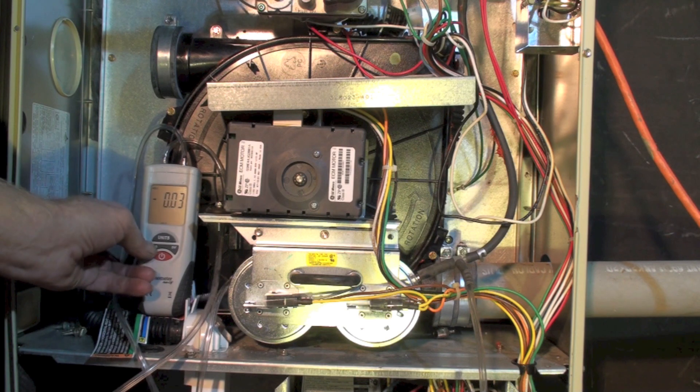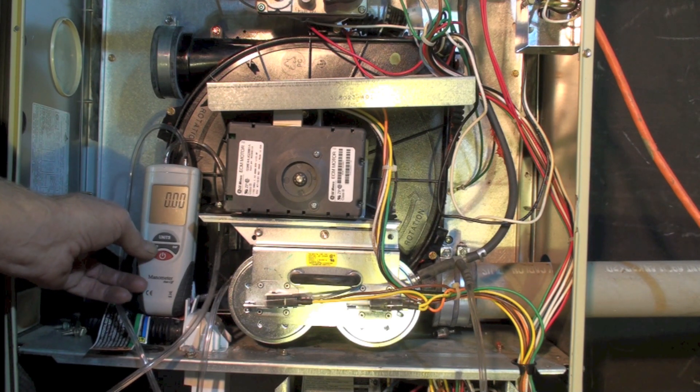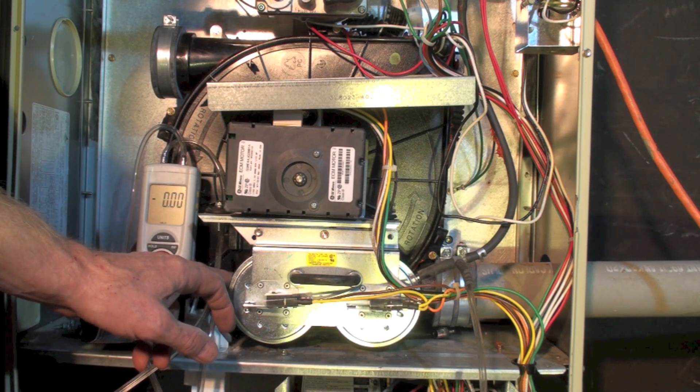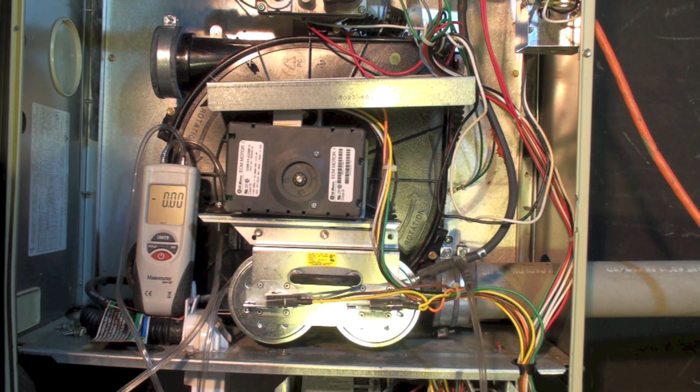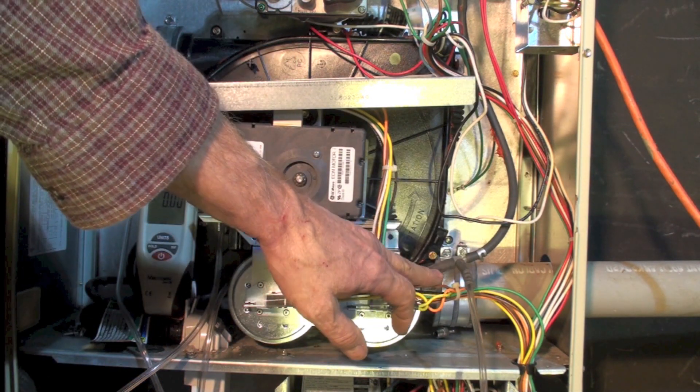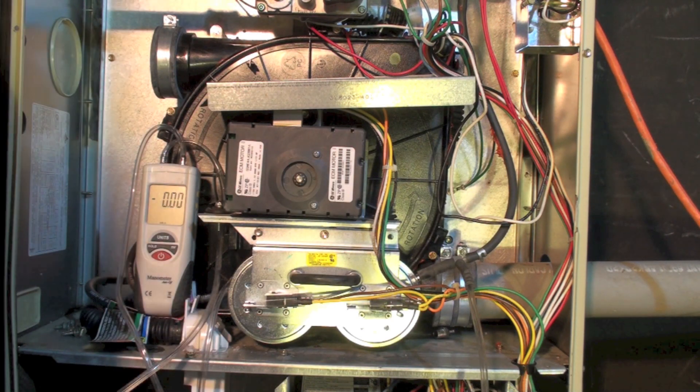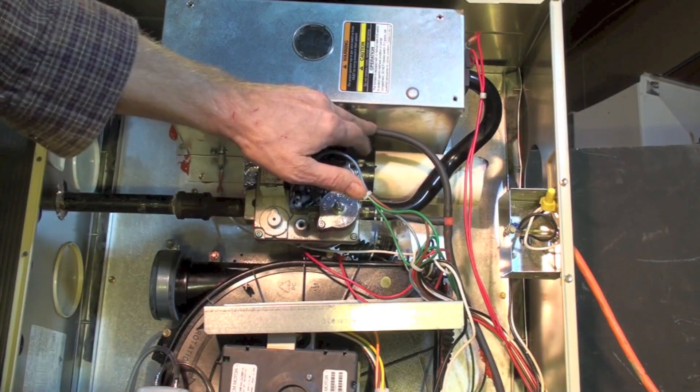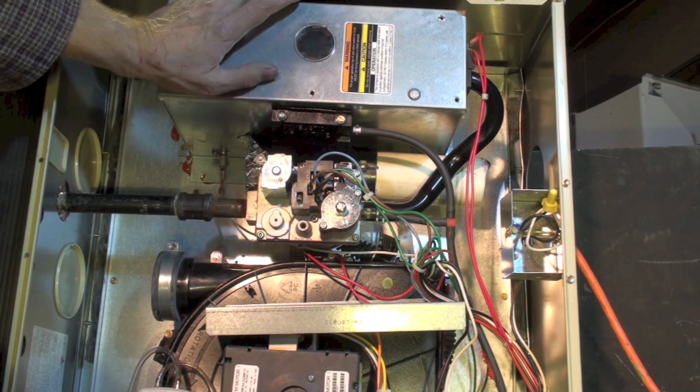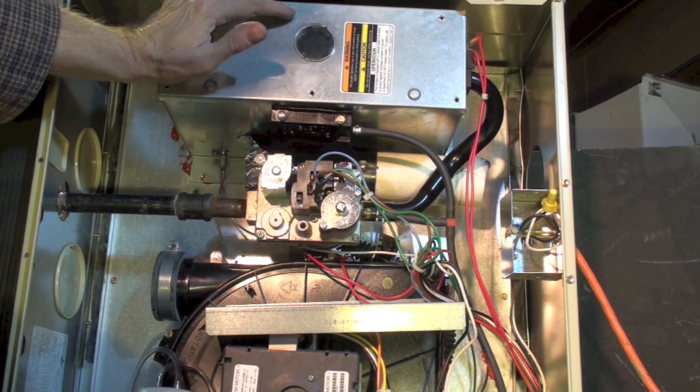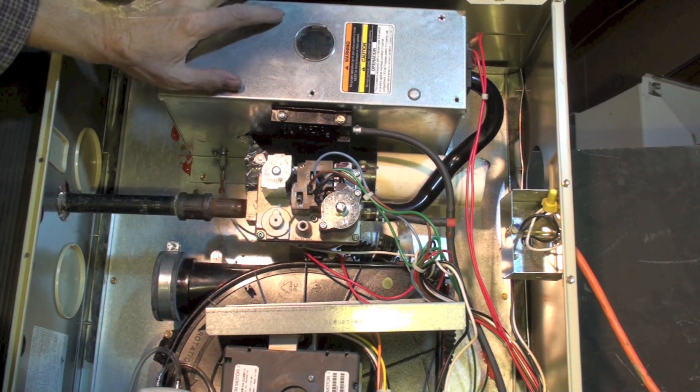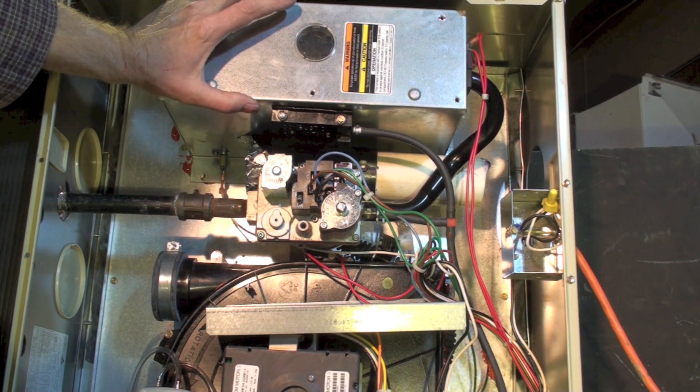Now I'm going to go ahead and zero out this manometer, so it's going to be taking the vacuum that the inducer pulls. The other side of this manometer goes over to here and I put a T in there also. What that's doing is this is a reference for the combustion chamber. It is taking the pressure of the combustion chamber, the negative pressure, and it's working on the opposite side of the pressure switch diaphragm as the pressure coming off the inducer.